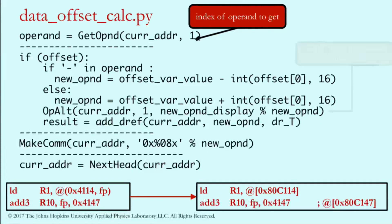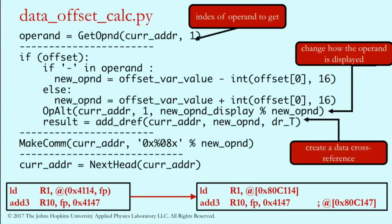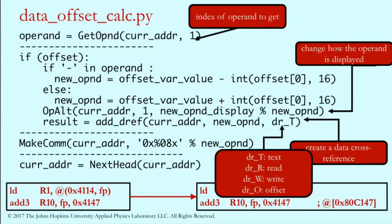The if offset was a match to the regular expression for what we were looking for in the operand. We're just checking if it's negative or positive so we can calculate the new value and resolve that memory address. The next IDA Python command is op alt. That's all you have to do to change the operand's presentation in the instruction. Now you can click on it, you can see the actual memory address. Add dref is how we create those data cross references from one place to another.